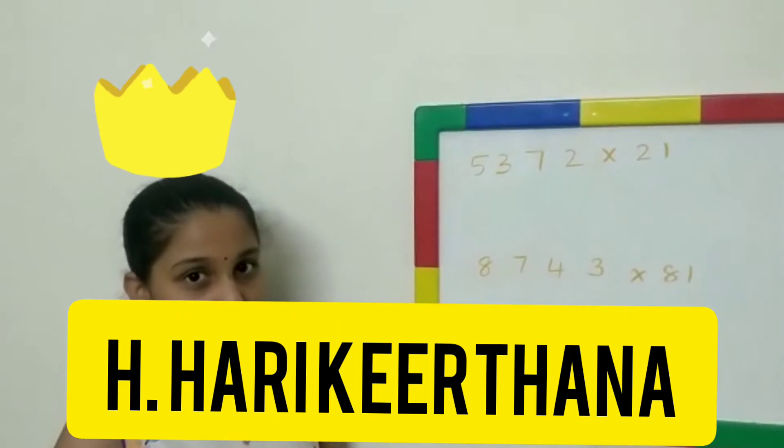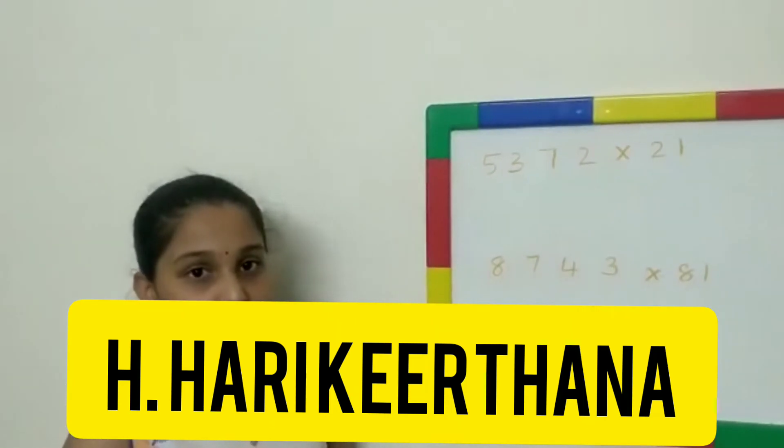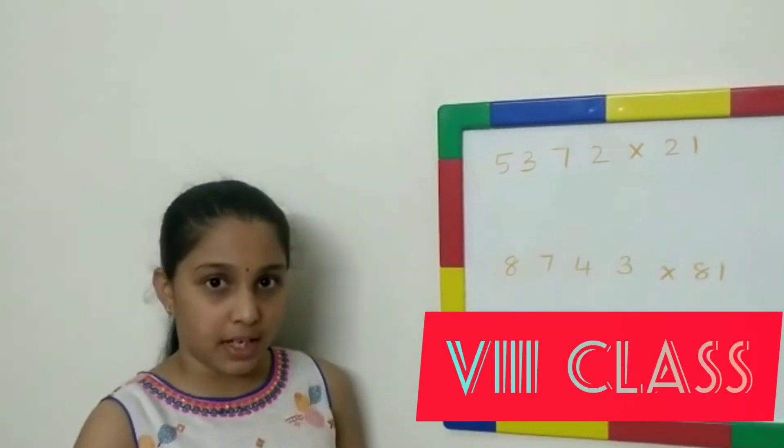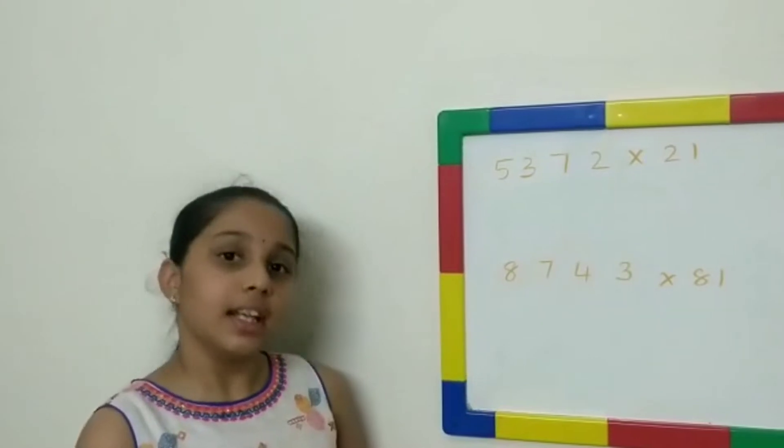Good morning, my name is Hari Kirtana. Today I'll be helping you with multiplying numbers ending with 1, such as 11, 21, 31, 41, 10, 90.